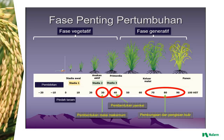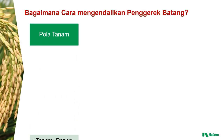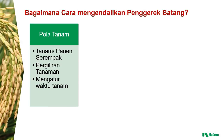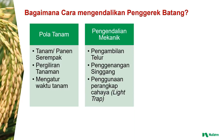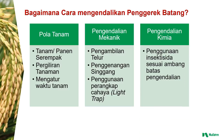Cara mengendalikan penggerek batang dimulai dari cara yang pertama dengan pola tanam, yaitu melakukan penanaman atau panen secara serempak. Yang kedua, pergiliran tanaman. Ketiga, mengatur waktu tanam. Kemudian pengendalian secara mekanis yaitu pengambilan telur, penggenangan singgang, penggunaan perangkap cahaya atau light trap. Dan yang terakhir, pengendalian secara kimiawi yaitu penggunaan insektisida sesuai dengan dosis yang dianjurkan, dengan memperhatikan batas ambang pengendalian.